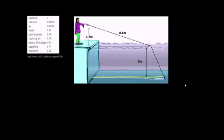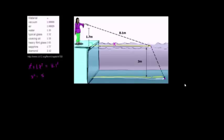Let's start with what's simplest — figuring out the distance along the water surface to where the laser first touches the water. This is a straight-up Pythagorean theorem problem. This is a right angle, and 8.1 meters is the hypotenuse. So let's call this distance x. x squared plus 1.7 squared equals 8.1 squared. Subtracting 1.7 squared from both sides, x squared equals 8.1 squared minus 1.7 squared, so x is the positive square root of that.